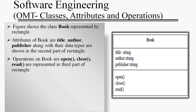Here is another example: the class Book, represented by a rectangle. The attributes of Book are title, author, and publisher, along with their data types, shown in the second part of the class box. Operations on the book — open, close, and read — are represented in the third part of the rectangle.